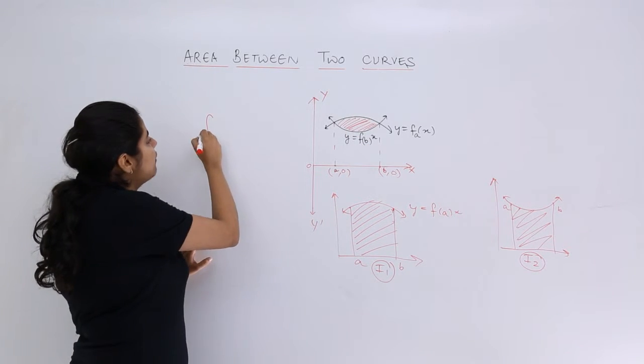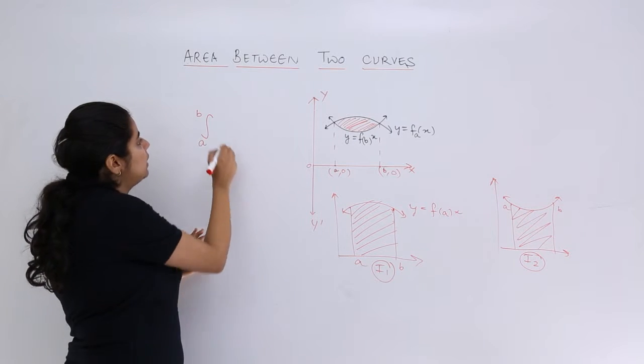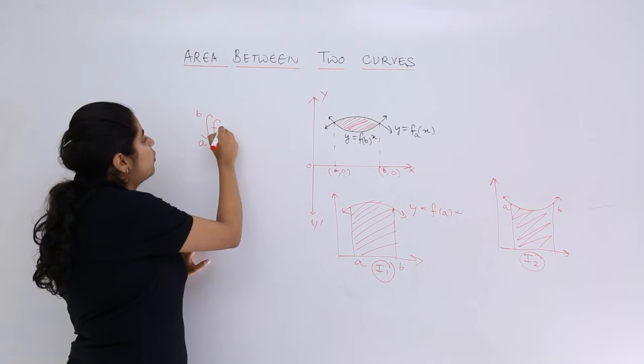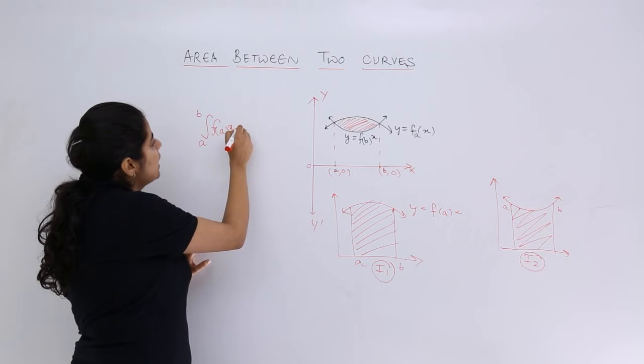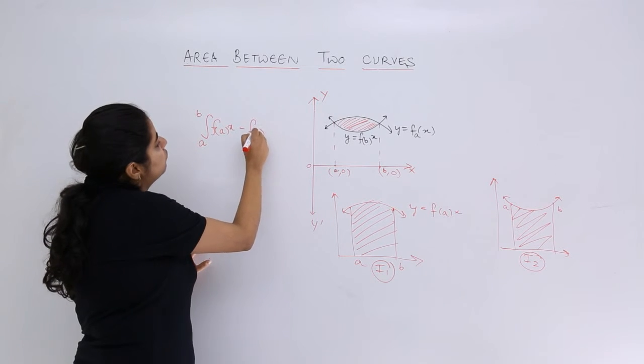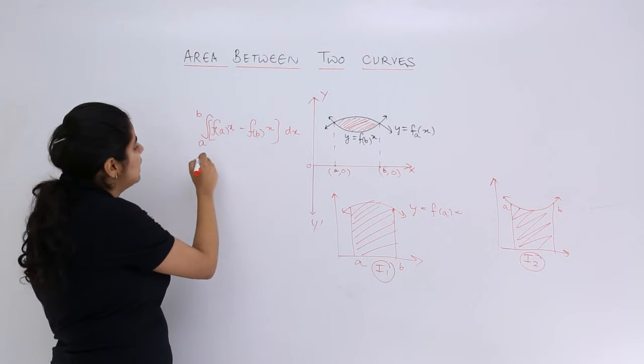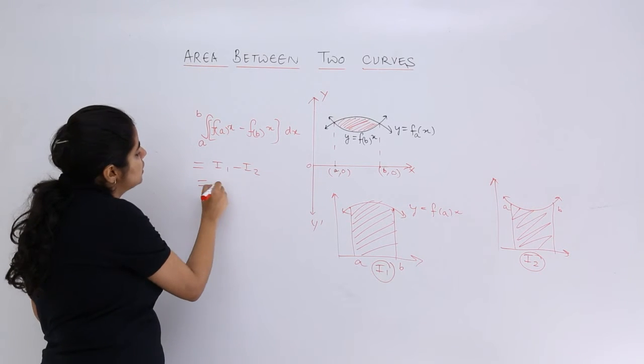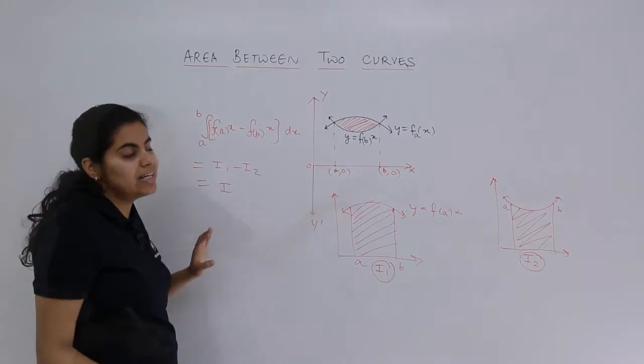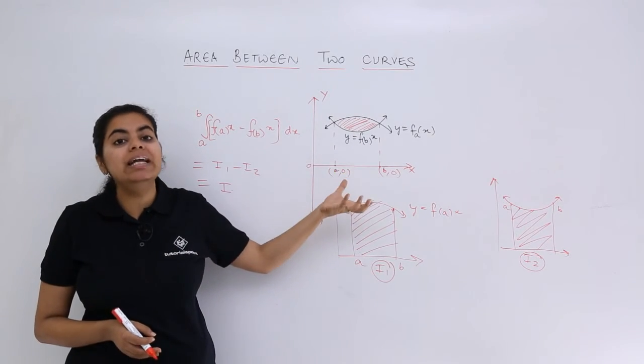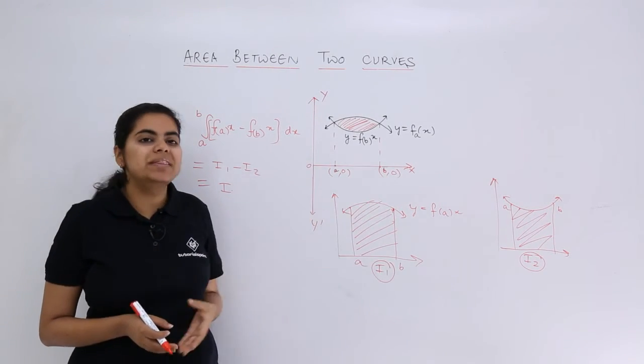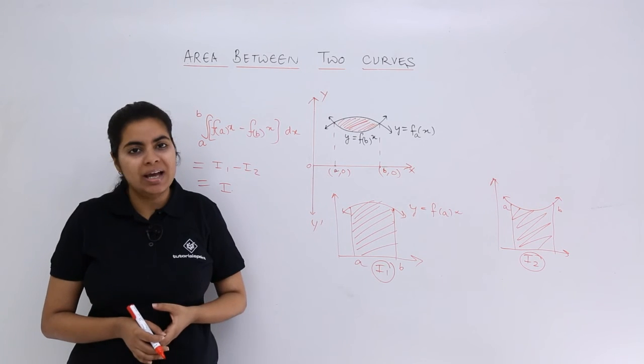So now you understand how I do it. I will be going from a to b, and that would be f of ax minus f of bx dx. Or simply I can get the answer by I1 minus I2 which equals I. And it is not area under a simple curve—it is area between the curves when the curves are given with regard to x axis.